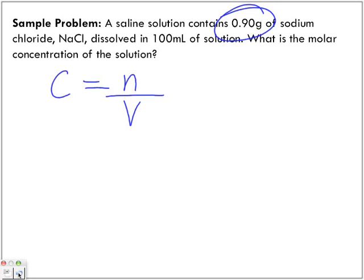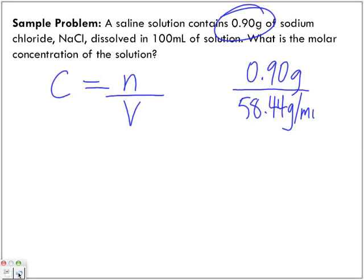So due to time constraints, 0.90 grams divided by the molar mass of NaCl is 58.44 grams per mole. Grams cancel out, and we're given 1.54 times 10 to the power of negative 2 moles of NaCl.